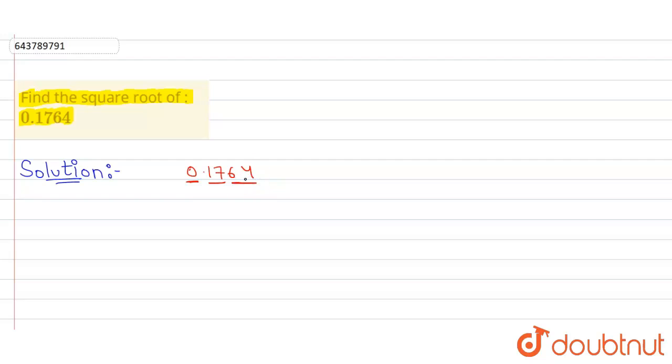So now let us find the square root by long division method. We have 0.1764. Now, the first digit is 0, so 0 into 0 is 0. Now we'll subtract this, and we'll get 017.